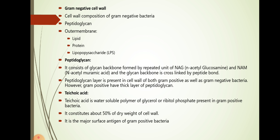Teichoic acid is a water-soluble polymer of glycerol or ribitol phosphate present in gram-positive bacteria. So teichoic acid is present in gram-positive bacteria only. It consists about 50% of dry weight of the cell wall. It is a major surface antigen of gram-positive bacteria.